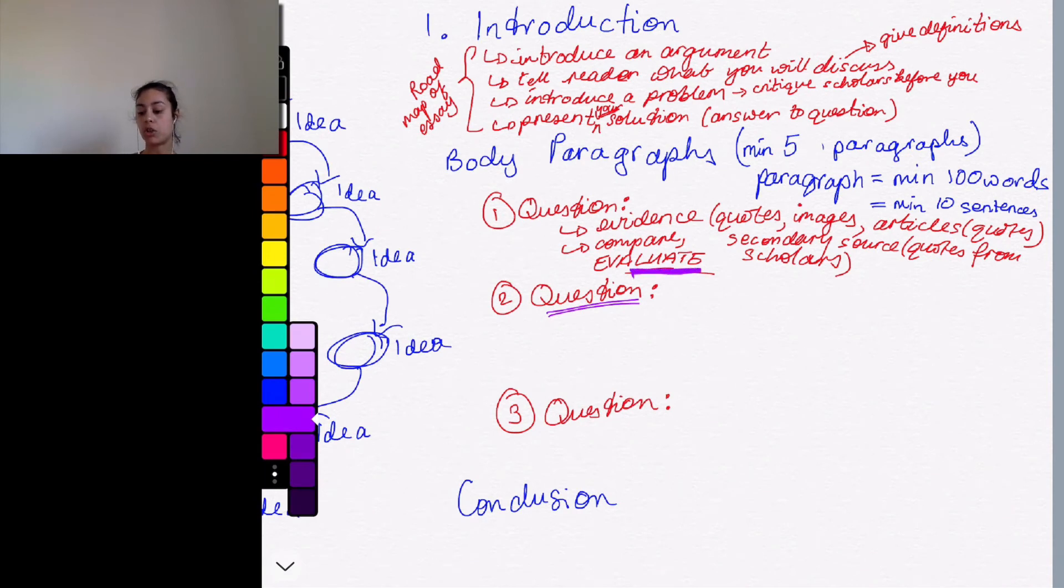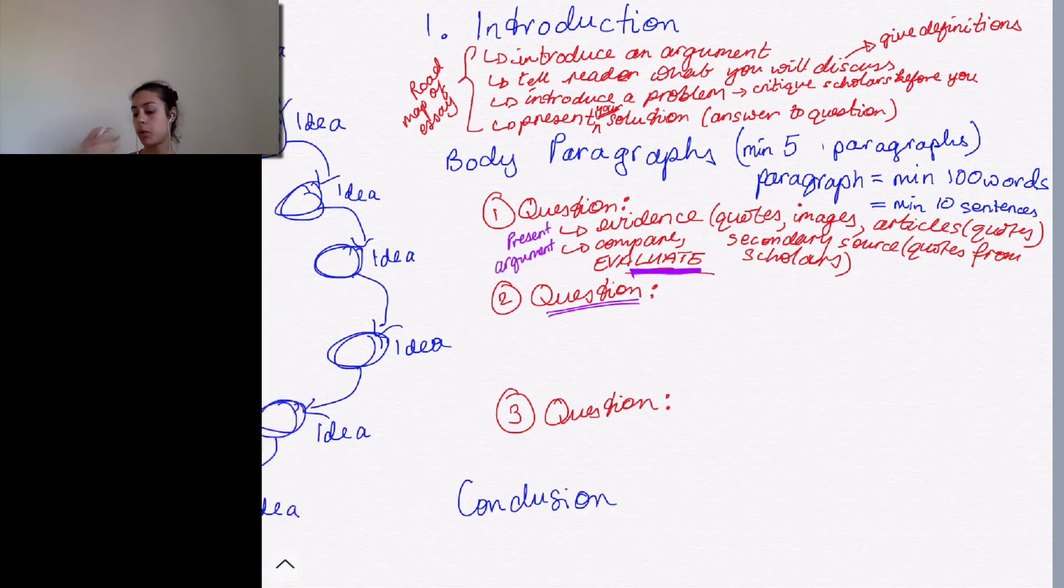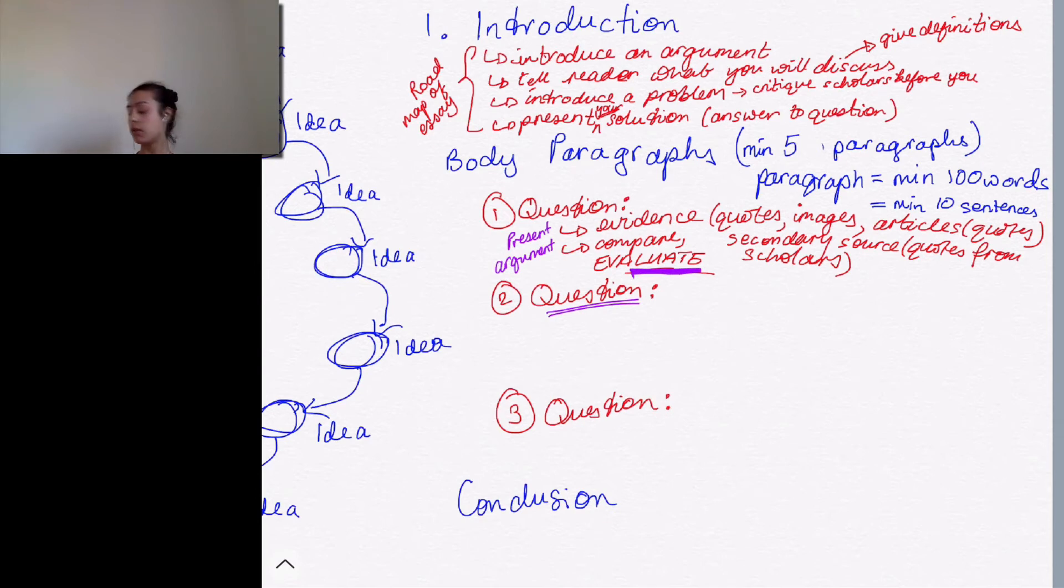And then this will help you evaluate your evidence and use it to persuade your reader of something. So when we do go over your plans or your first drafts, you may get comments that say too descriptive. When it's too descriptive it means there is no argument and I don't understand why you're giving me this information. It doesn't help me understand your point of view and the problem you're trying to solve in this essay.